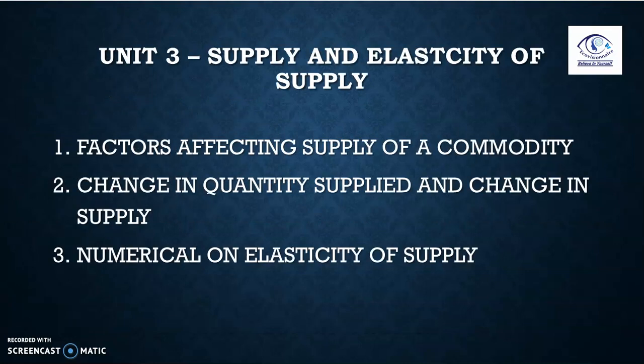Coming to the second part of unit three — supply and elasticity of supply — the topics are the same as demand, just with a different law. Cover: factors affecting supply of a commodity, which factor leads to rightward shift, leftward shift, extension, or contraction; change in quantity supplied due to price; change in supply due to other factors. We are also expecting a numerical on elasticity of supply, using the same formula as demand.